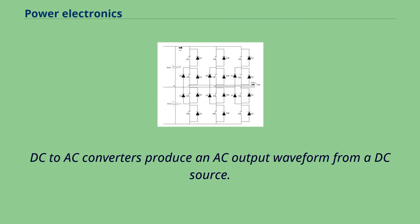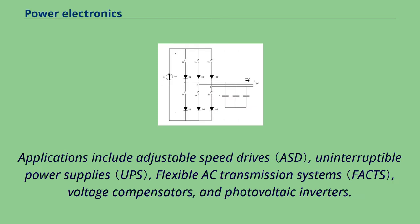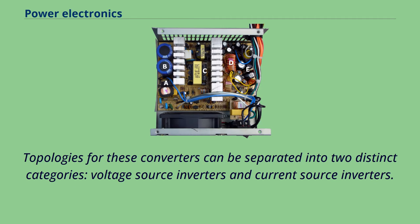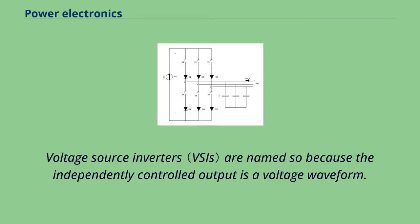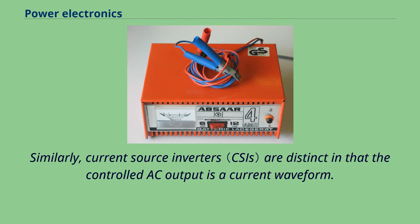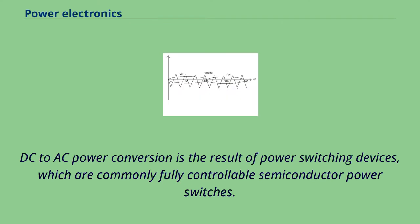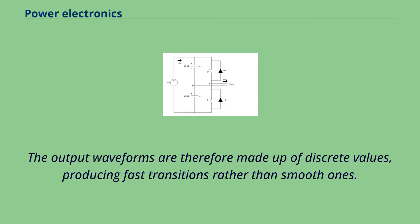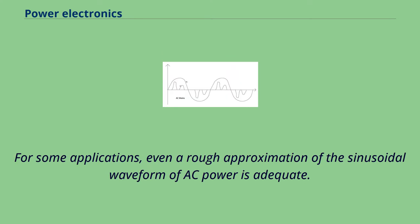DC-to-AC converters produce an AC output waveform from a DC source. Applications include adjustable speed drives, uninterruptible power supplies, flexible AC transmission systems, voltage compensators, and photovoltaic inverters. Topologies can be separated into two distinct categories: voltage source inverters and current source inverters. Voltage source inverters are named so because the independently controlled output is a voltage waveform. Similarly, current source inverters are distinct in that the controlled AC output is a current waveform. DC-to-AC power conversion is the result of power switching devices, producing output waveforms made up of discrete values with fast transitions rather than smooth ones. For some applications, even a rough approximation of the sinusoidal waveform of AC power is adequate.